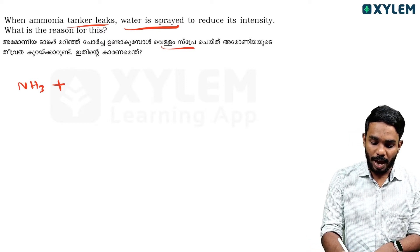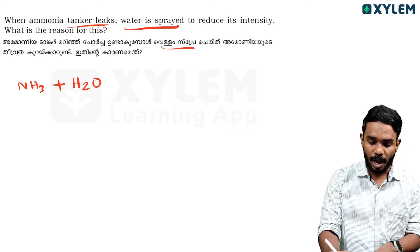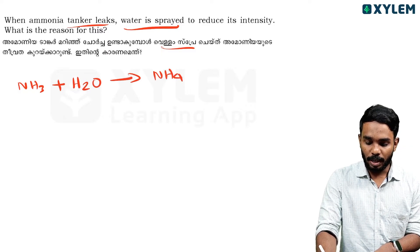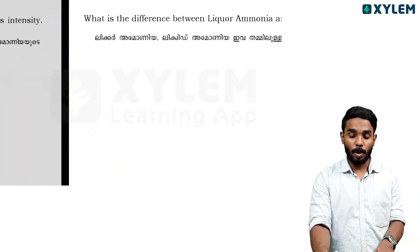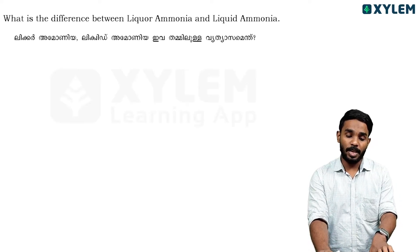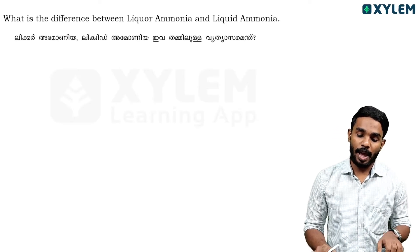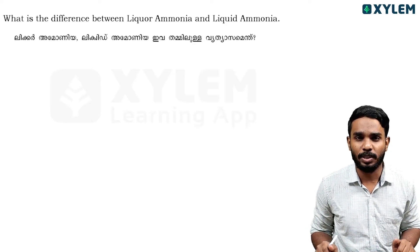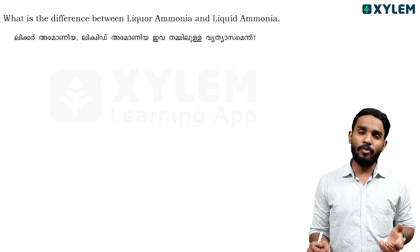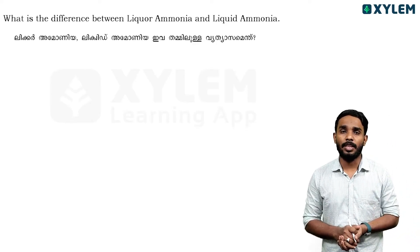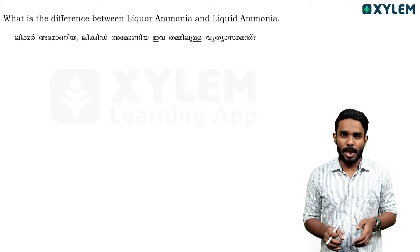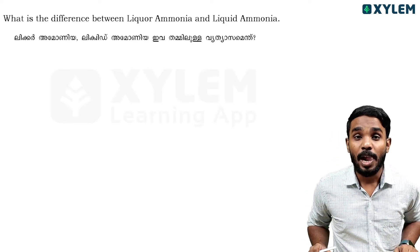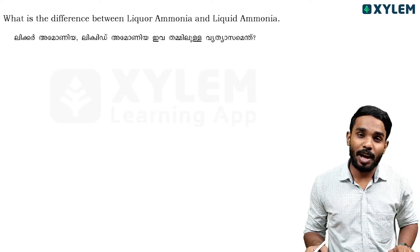Ammonia is highly soluble in water because ammonia reacts with water to form ammonium hydroxide (NH4OH). What is the difference between liquor ammonia and liquid ammonia? Liquor ammonia is a highly concentrated ammonia solution, while liquified ammonia is liquid ammonia.